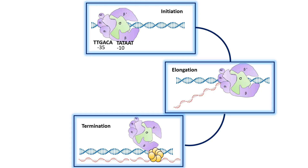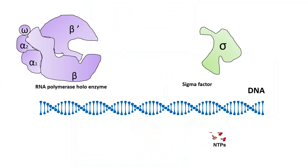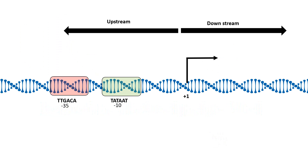We will go through each phase one by one and look at the details of the events in each. Let's begin with initiation. In initiation, the key players are the DNA that needs to be transcribed, the RNA polymerase, and the sigma factor. The RNA polymerase and sigma factor together form the RNA polymerase holoenzyme, along with the nucleotide triphosphates which are used to synthesize the nascent mRNA.